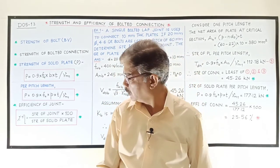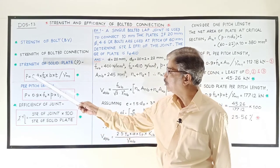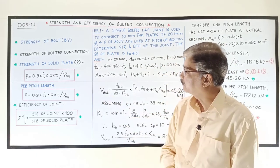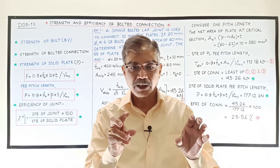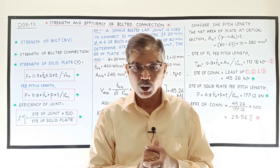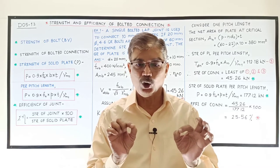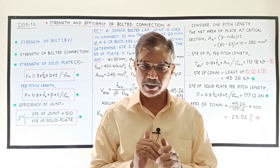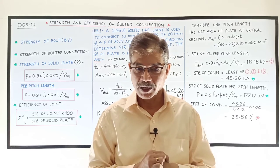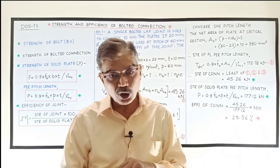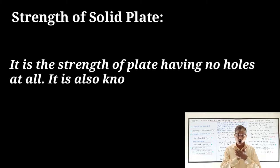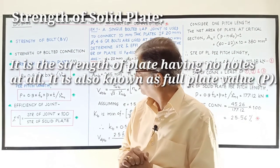Now let us see what is the meaning of strength of solid plate. Whenever we place bolts, it is necessary to make holes in those plates. Due to the holes, the strength of the plate reduces. The plate without holes is known as solid plate. So the strength of solid plate is the strength of the plate having no holes at all. It is also known as full plate value.